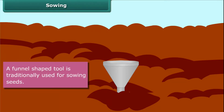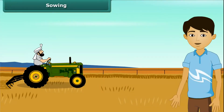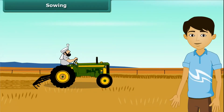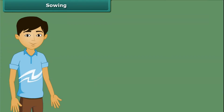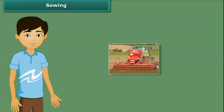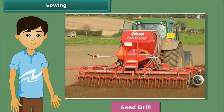Nowadays, farmers use modern seed drills for sowing with the help of tractors. The seed drill sows the seeds uniformly at a proper distance and depth, ensuring that seeds get covered by the soil after sowing. This process also saves a lot of time and labor.